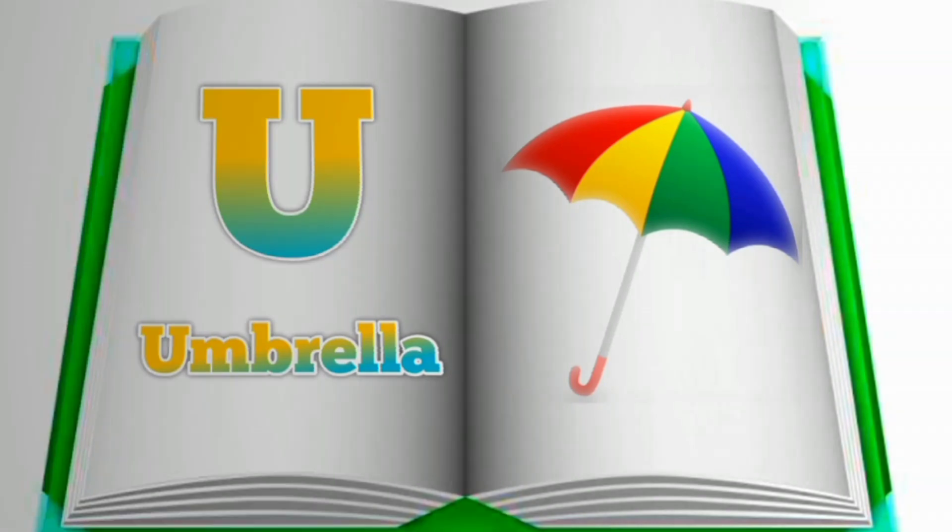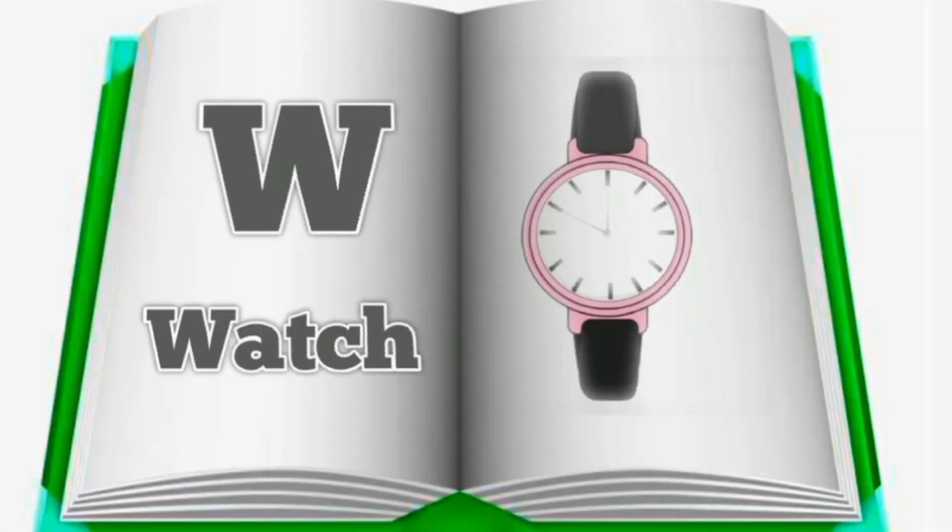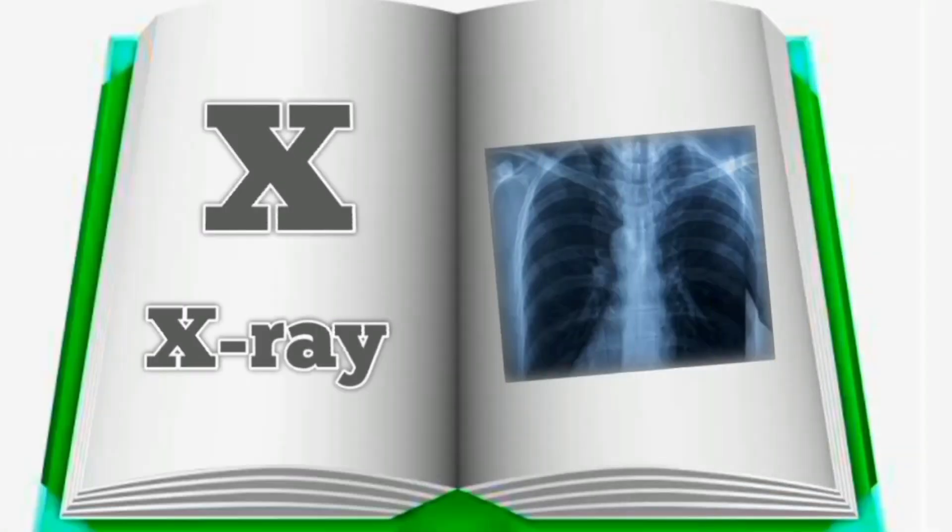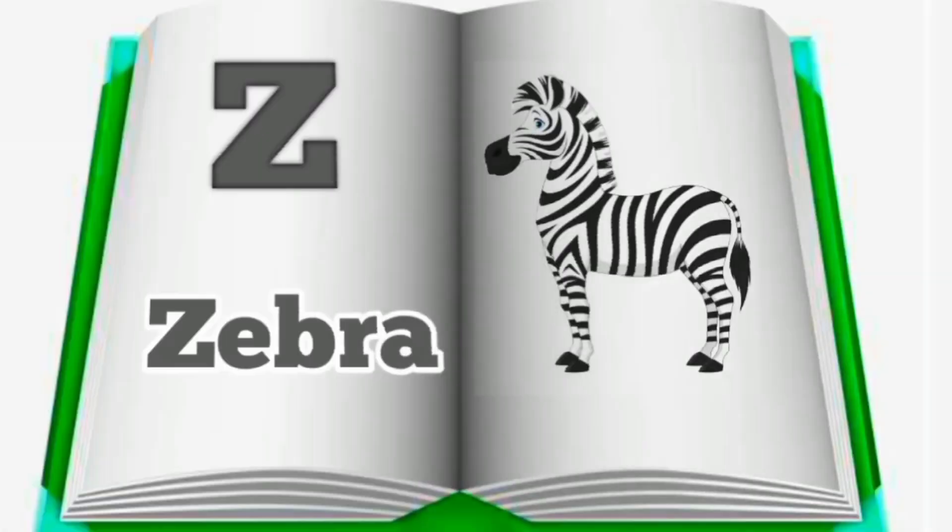V. V for van. W. W for whale. X. X for X-ray. Y. Y for yoke. Z. Z for zebra.